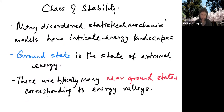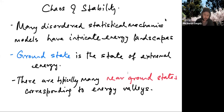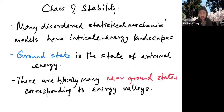Having set up the basic framework of last passage percolation, let's talk about chaos and stability. Many disordered statistical mechanics models have intricate energy landscapes; in particular, last passage percolation has a ground state which is the state of extremal energy — you can think of it as the maximum weight path. In LPP, you can think of the landscape as indexed by paths: for every path there is an associated energy or weight, and the ground state is the path with the largest energy.